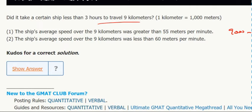For instance, number one - it was greater than 55 meters per minute. These are all conversions which have meters in one minute. So assuming it traveled for three hours, 60 minutes in one hour times three hours.